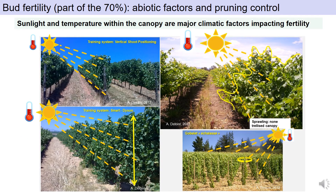Obviously, climatic conditions and vine physiology will matter for yield components. We have known for many years that bunch and canopy microclimates are very important for the differentiation of the latent bud. The main abiotic factors affecting the differentiation of future latent buds are temperature, light, and vine water status. The main role of a training system is to help manage canopy and bunch microclimate, along with cultural practices.